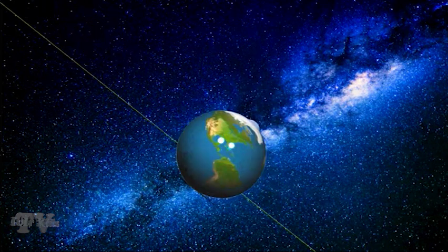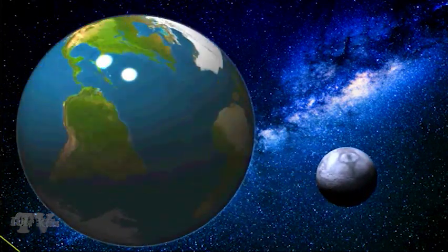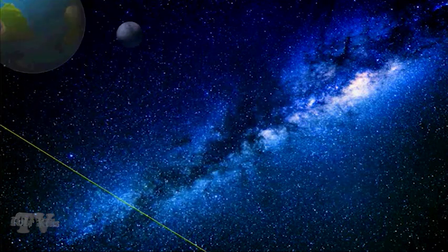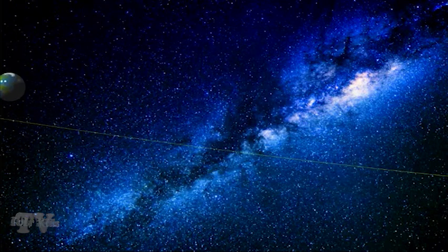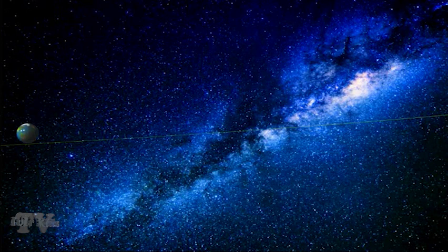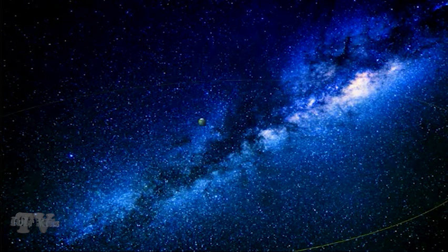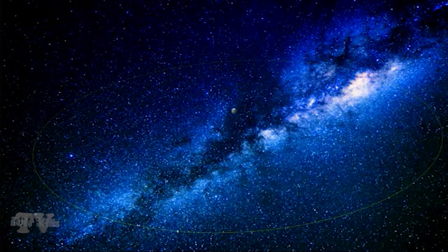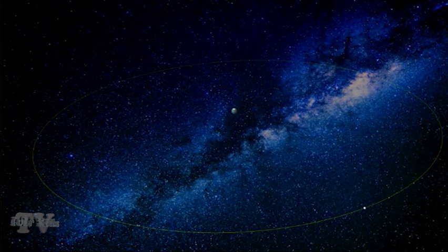The closest object to us is the Moon, a natural satellite of the Earth. It seems to us that the Moon is close, but the distance from the Earth to the Moon is approximately 384,403 km, or 30 diameters of the Earth. And it will look like this.